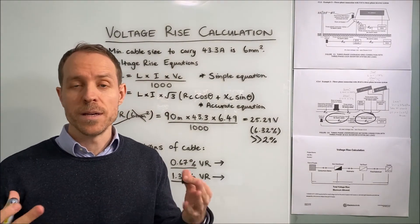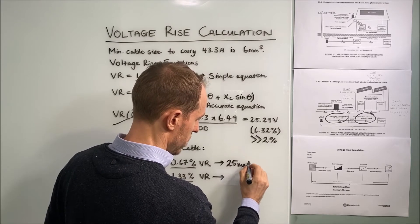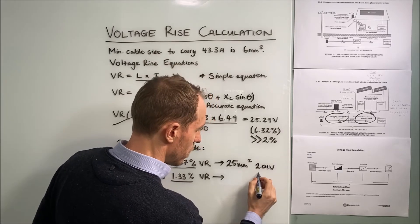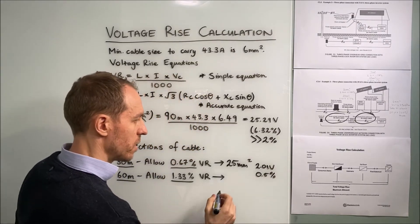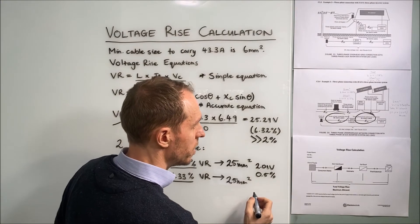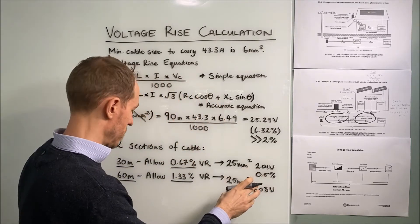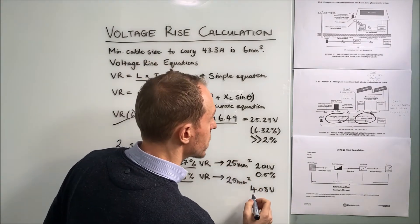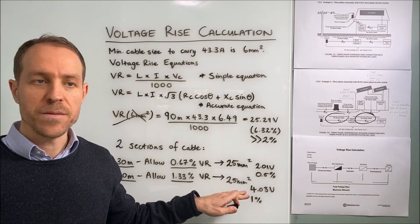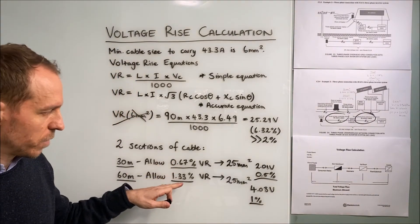So if we go to 25 square millimeters cable for the first section, our voltage rise calculated by hand is 2.01 volts or 0.5%. For our second section using 25 square millimeters, the calculated result is 4.03 volts, basically double, of course it's double the length, or 1%. In both cases, if we use a 25 square millimeter cable, both of these results are under our allowable limits for the sections.